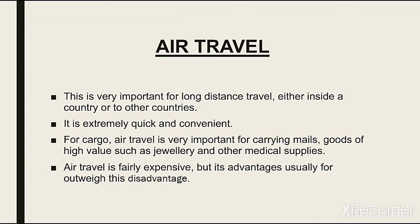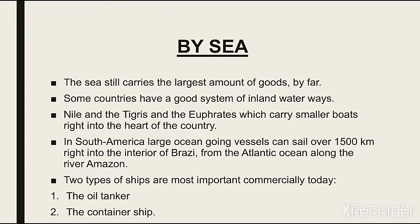Air travel سے نہ صرف لوگ منتقل ہوتے ہیں بلکہ trade کے لیے بھی اسے استعمال کر کے ایک ملک سے دوسرے ملک میں سامان منتقل کیا جاتا ہے۔ By sea transportation کی بات کریں تو دو قسم کی ships ہیں: number one oil tanker اور second container ship۔